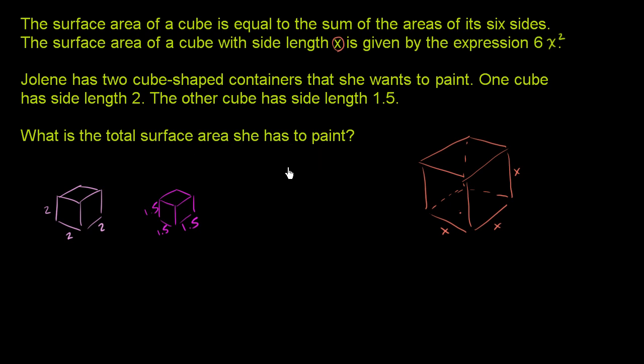Well, we know that the surface area of each cube is going to be 6x squared, where x is the dimensions of that cube. So the surface area of this cube right over here is going to be 6. And now, let me do it in that color of that cube. It's going to be 6 times x, where x is the dimension of the cube.